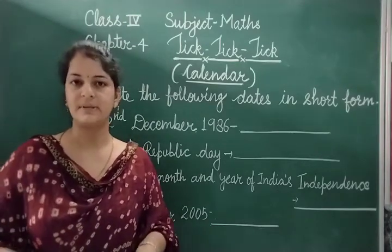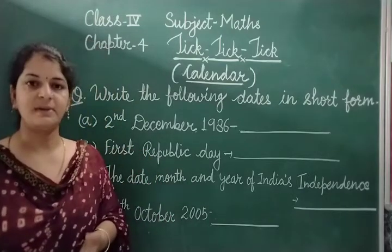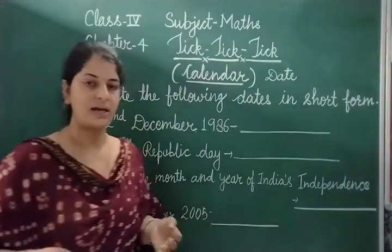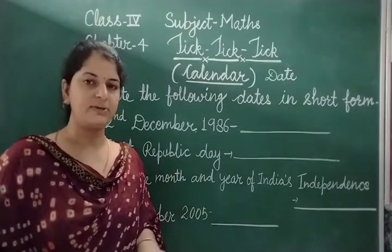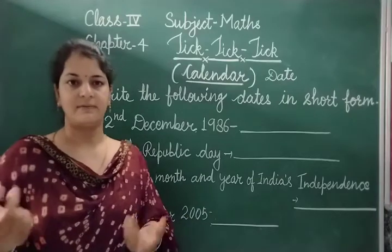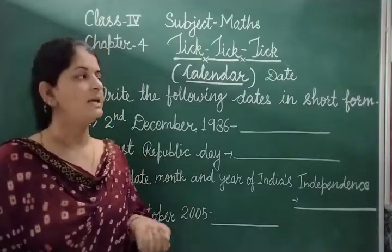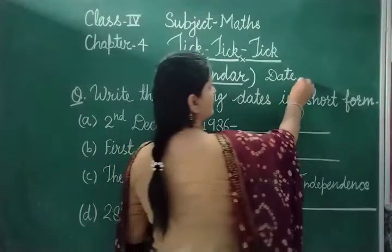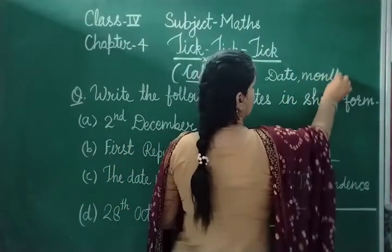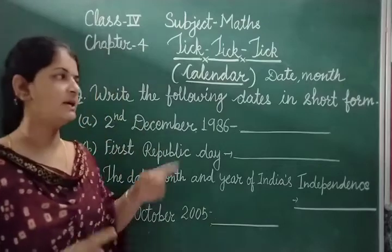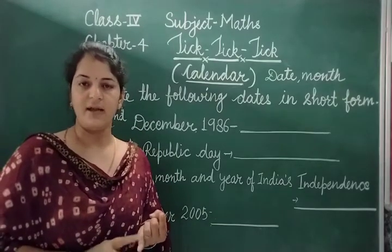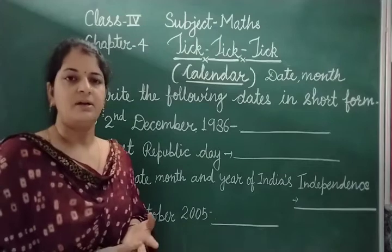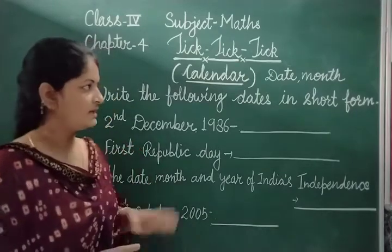If you look at a calendar at your home, it shows the date. The months are: January, February, March, April, May, June, July, August, September, October, November, and December — these are 12 months.